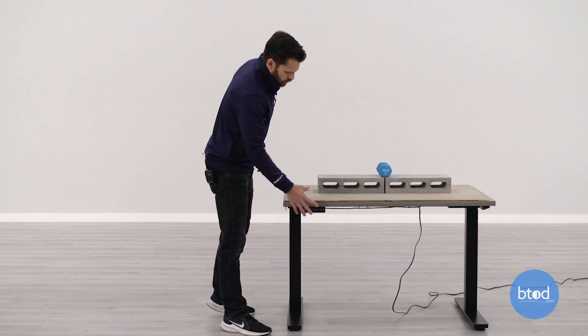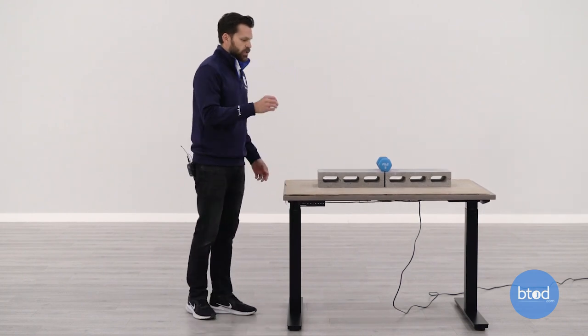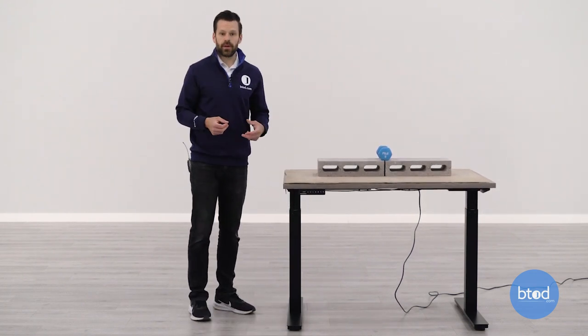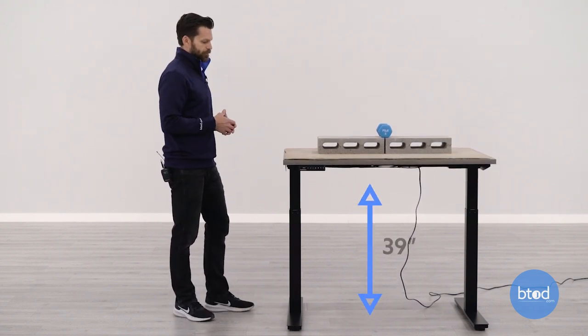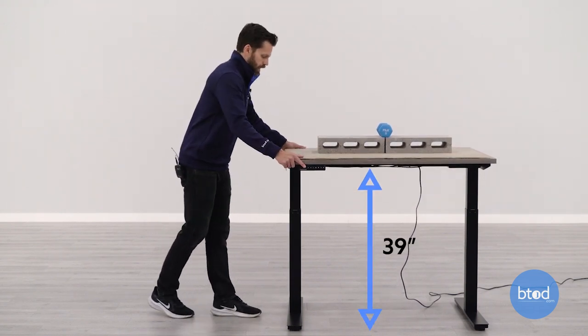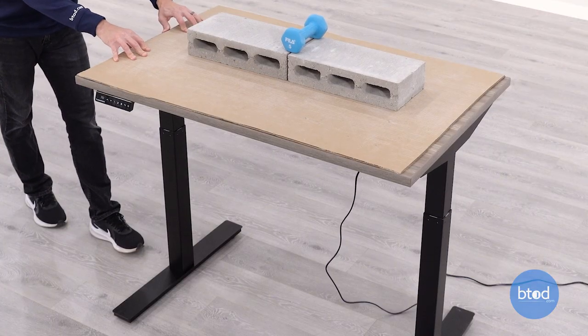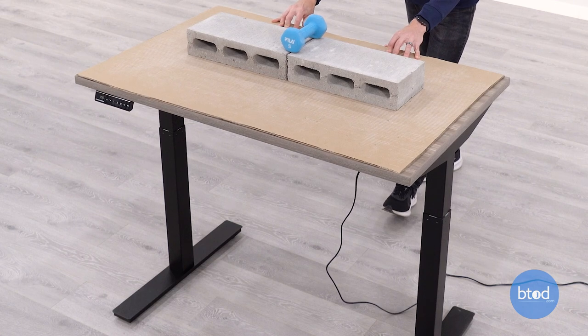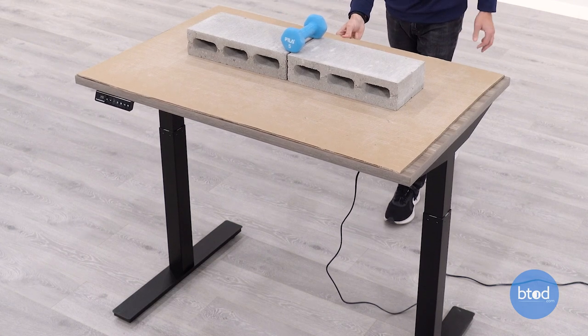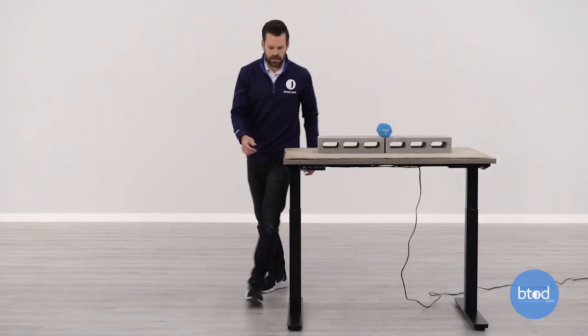Now we're going to jump up to our first height, which is 39 inches. This is the height that the average female, who's about 5'4 in the United States, would stand at their desk. And we'll go ahead and do the same thing here. We'll do the wobble first, you can see, nice and solid at that height. And we'll do the rocking test. Same thing here. Nice and solid.